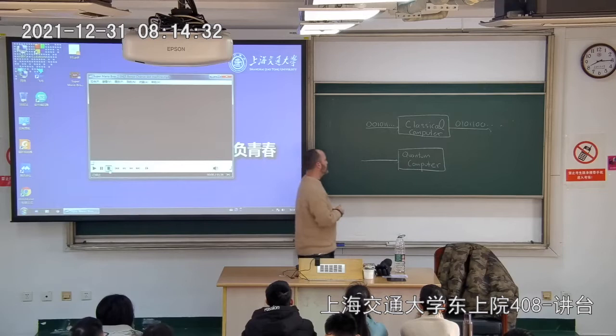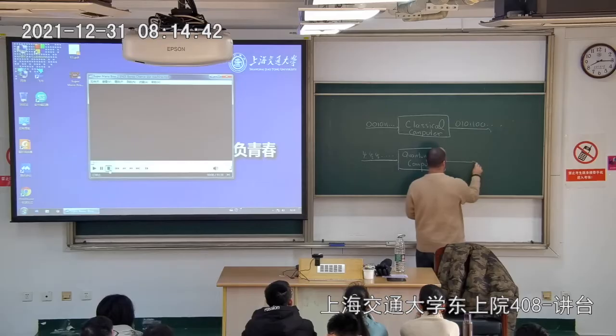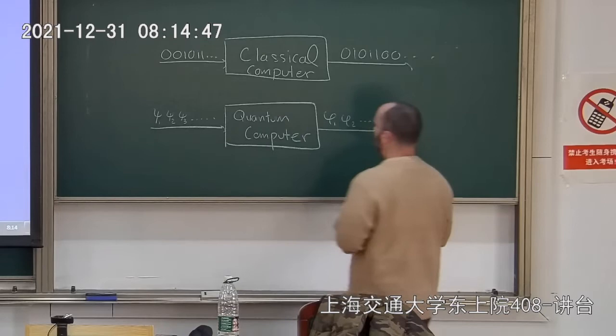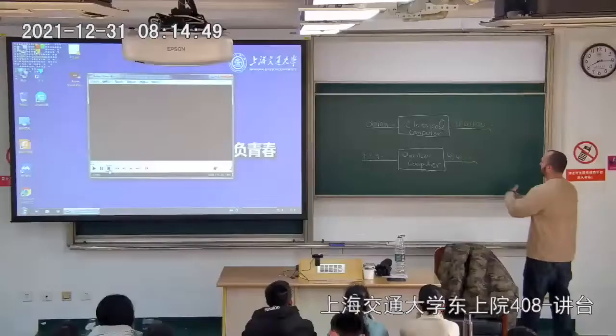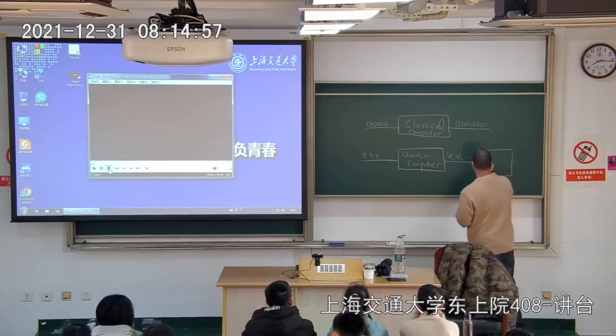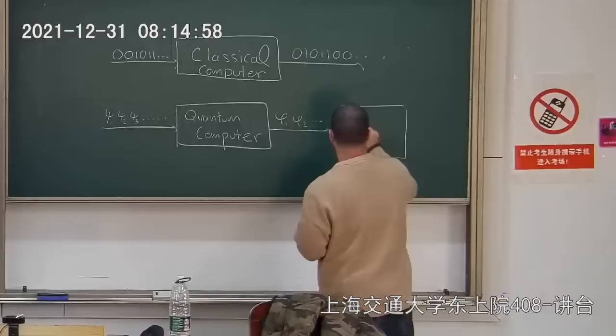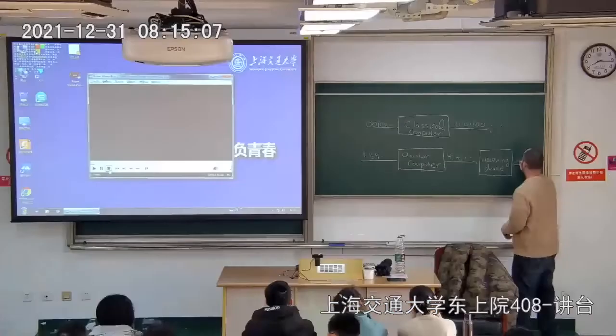Let's say psi_1, psi_2, psi_3 — and it outputs a qubit, let's say phi_1, phi_2, and so on. Then you do some measurement process and put it through some measuring device. The output is a classical bit.